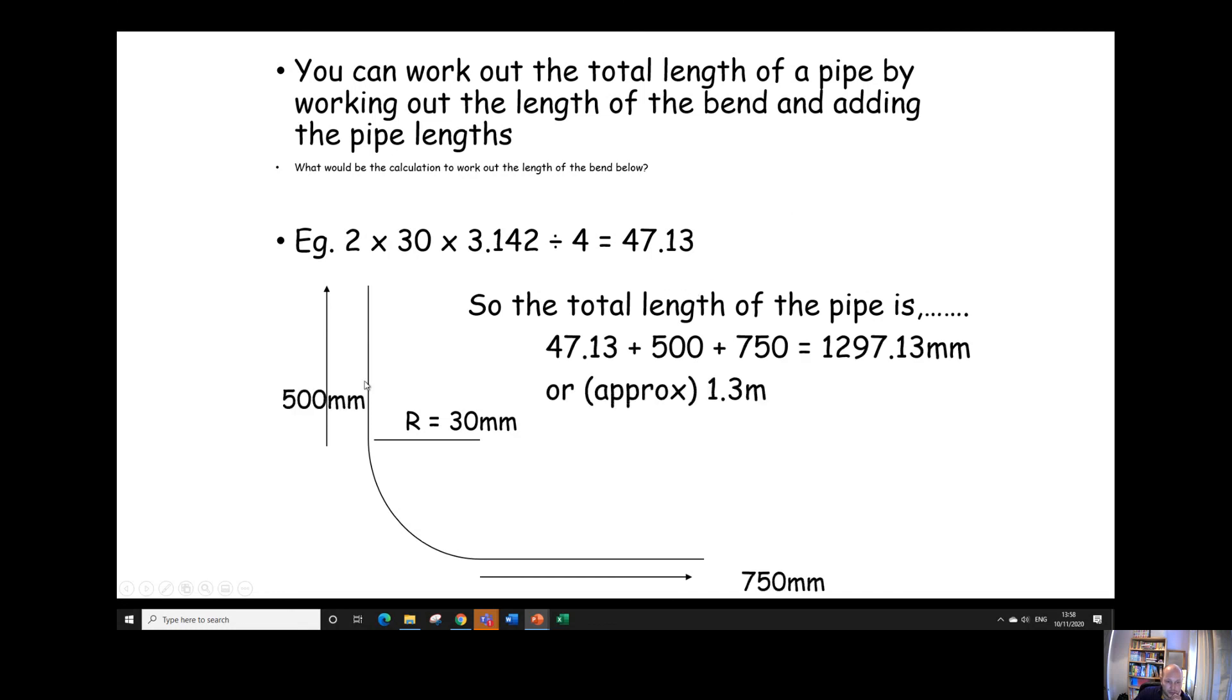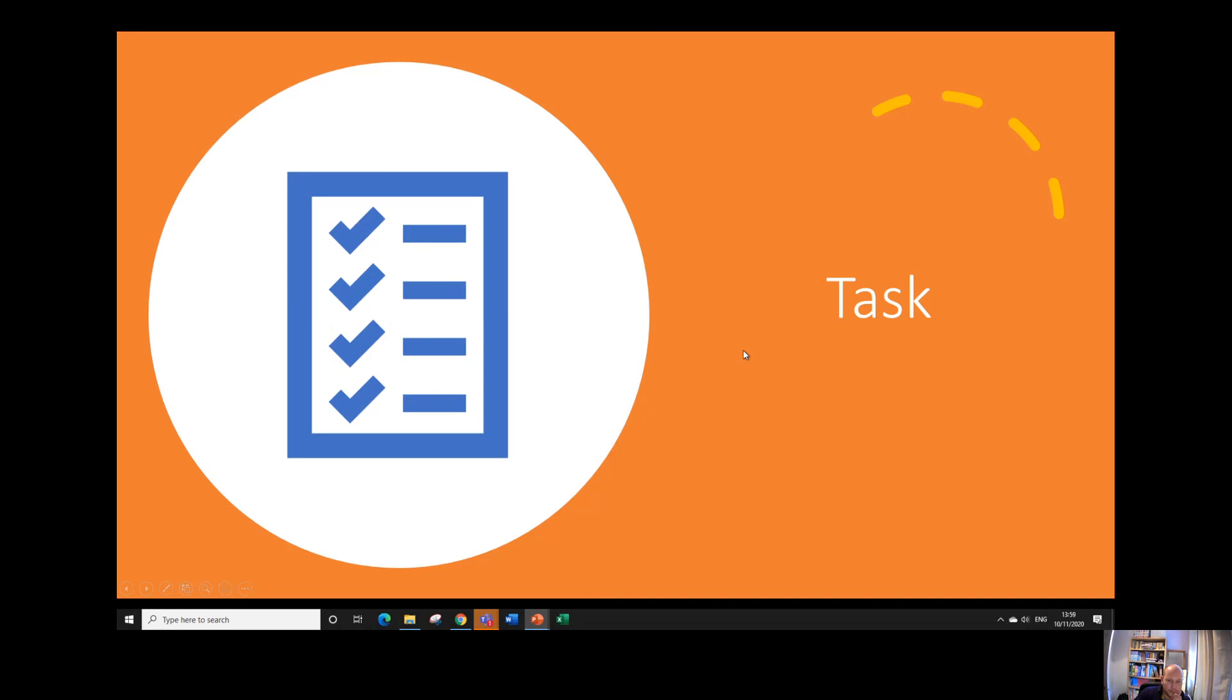So in this case, we've got 500 on one side, 750 on the other. So the 500 plus 750 plus the length of the bend, which is 47 in a bit, which comes to a total of roughly 1.3 metres or 1297 millimetres. Now it is time for you to do this task.